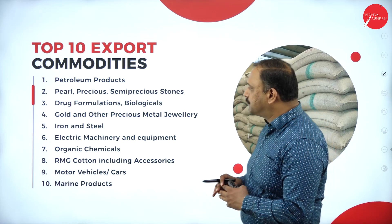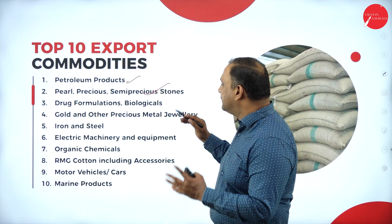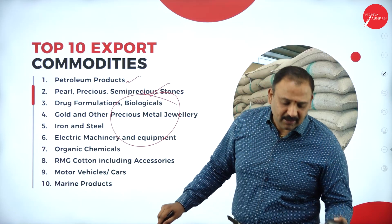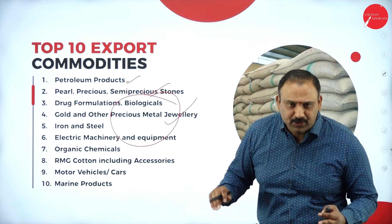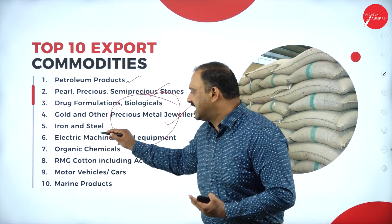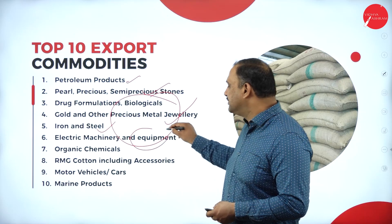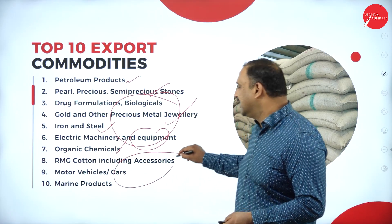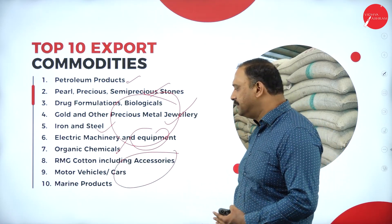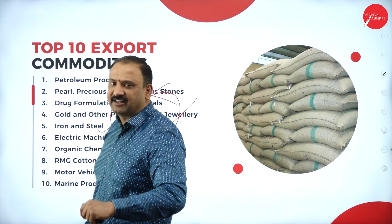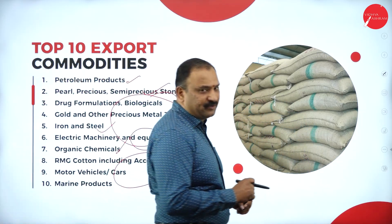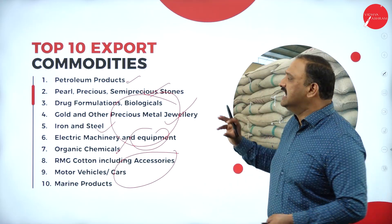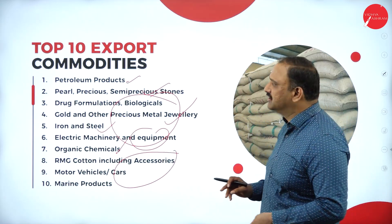The top 10 export commodities are: petroleum products, pearl and precious and semi-precious stones, drug formulations and biologicals, gold and other precious metal jewelry, iron and steel, electric machinery and equipment, organic chemicals, RMG in cotton including accessories, motor vehicles, and marine products. These are the areas we have been concentrating on for growth and expansion.